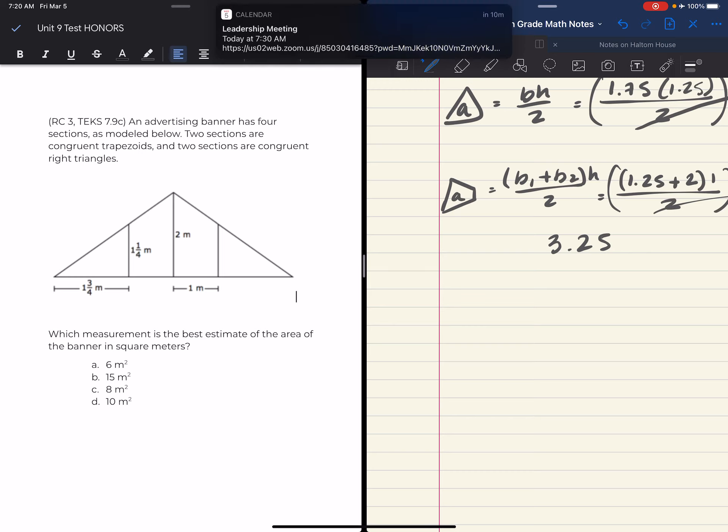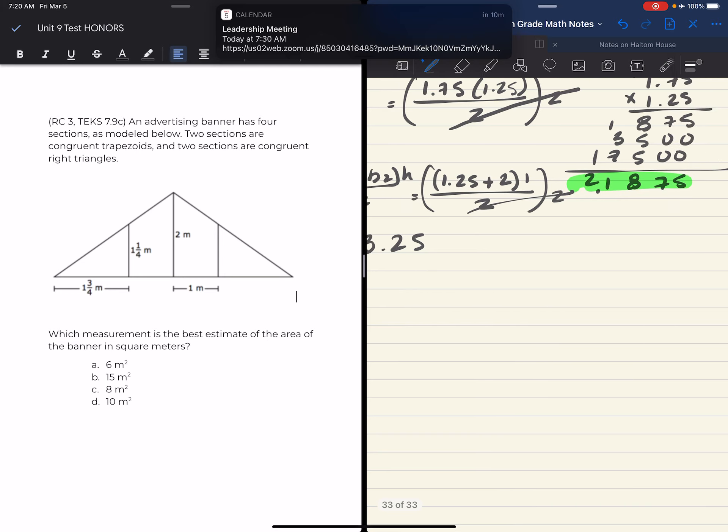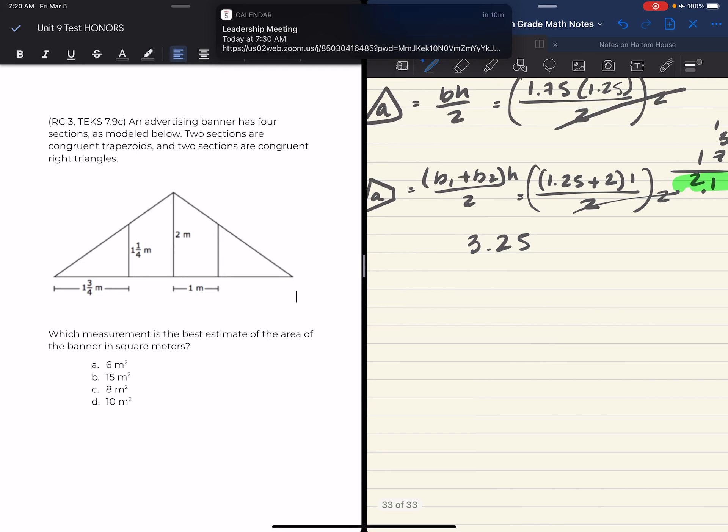And then we are going to add 2.1875 plus 3.25. So 2.1875... But just looking at this, I'm probably going to guess six is my answer is what I'm thinking.